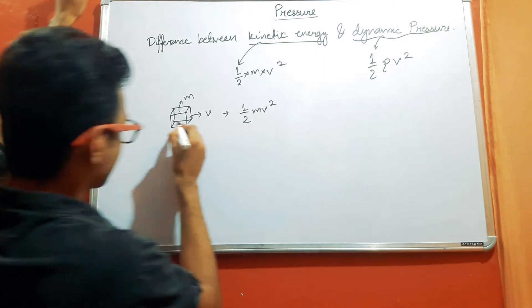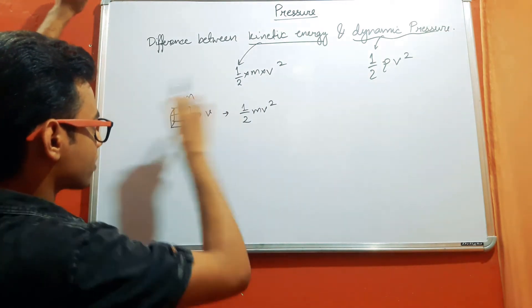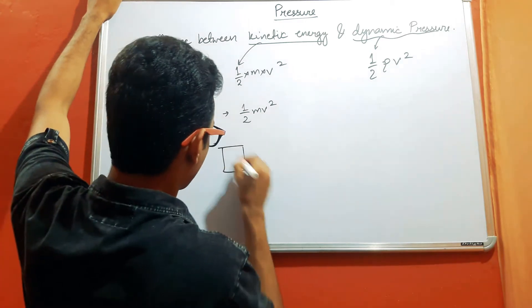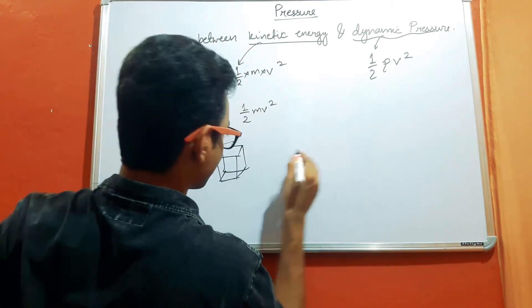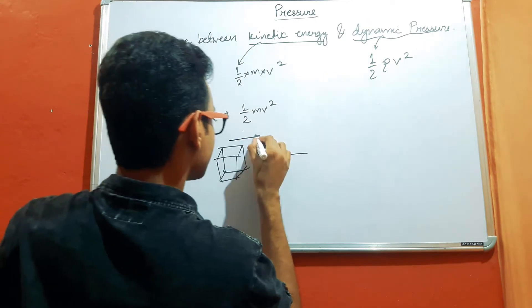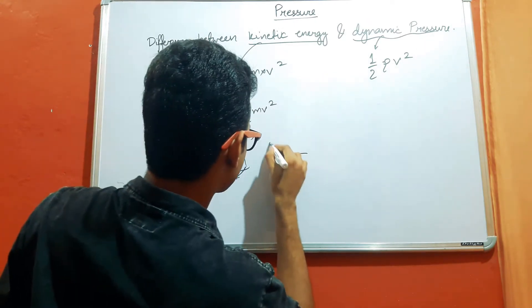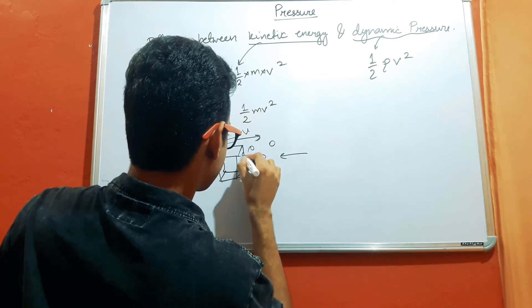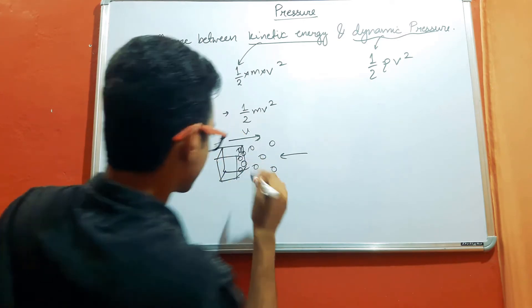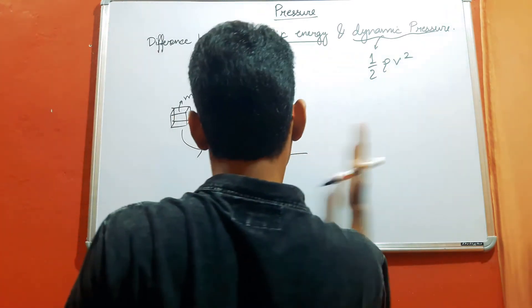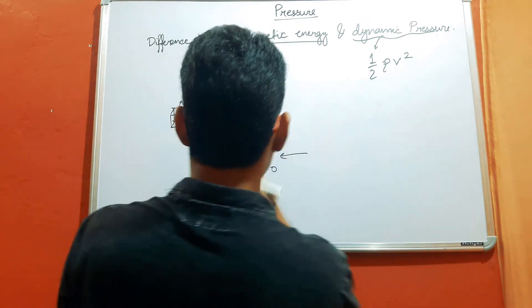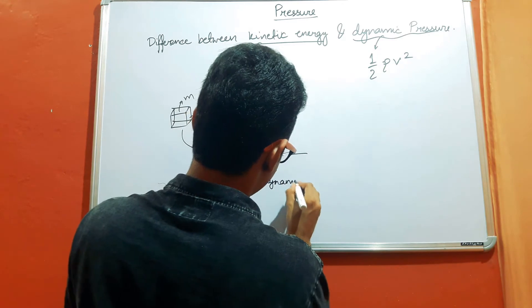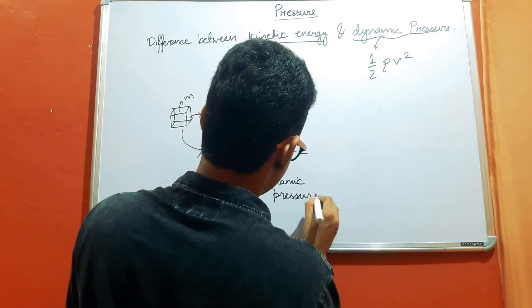And as a result of this kinetic energy, or as a result of this velocity and motion, the air molecules will hit this particle from the opposite direction. If this particle is moving in this direction with velocity v, then the air molecules will hit this particle from this direction, and because of this hitting of molecules, there will be a pressure associated — and that pressure is nothing but dynamic pressure.